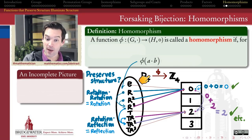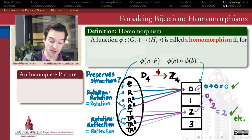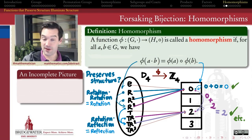If I use the operation in my first group and then apply my function—if I do a times b using the multiplication of the group G, and then apply the function φ—the result is the same as if I had instead applied φ individually to each of a and b, and then used the operation in the target group H to combine the results together. This is the same property that we saw when we introduced isomorphisms earlier in the semester. This is what we called operation preserving, or structure preserving, or structure respecting.